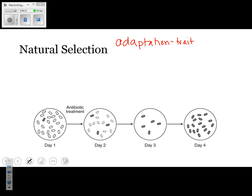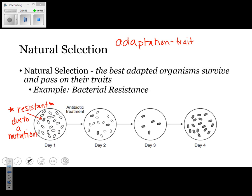By day four, the only ones left are the ones that are resistant. That gray one is what we call resistant. Why is it resistant? It's resistant due to a mutation — something happened to its gene. That characteristic was positive, so they were able to survive and reproduce. That's what natural selection is. Natural selection means you can survive and pass on your traits — or simply put, survive and reproduce.